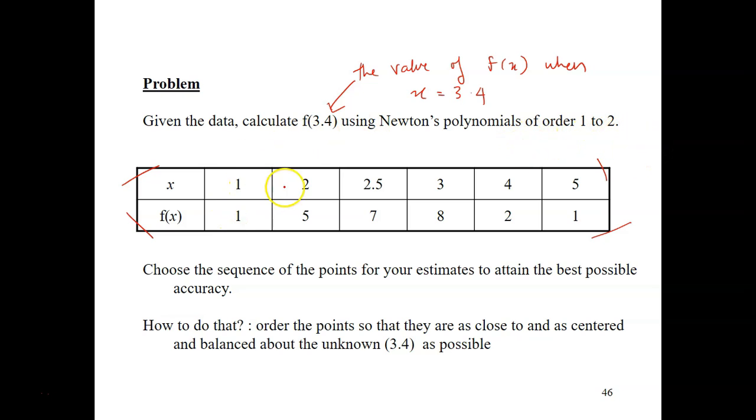If you look at this one, x equals to 3.4, it's between this data here. So choose the sequence of the points for your estimates to attain the best possible accuracy. What does it mean by this? Choose the sequence of the points.